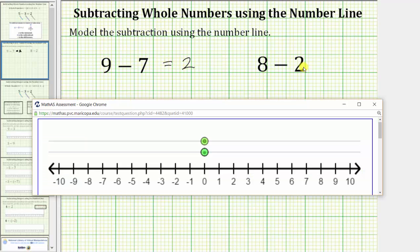Now we will model eight minus two using the number line. We begin by modeling eight on the number line by moving the bottom point right eight units from zero to positive eight on the number line.